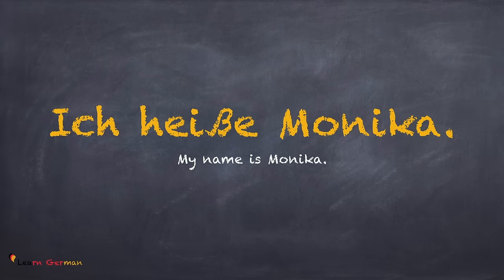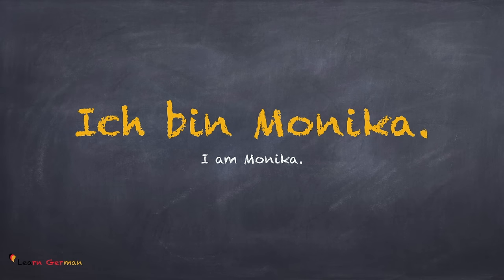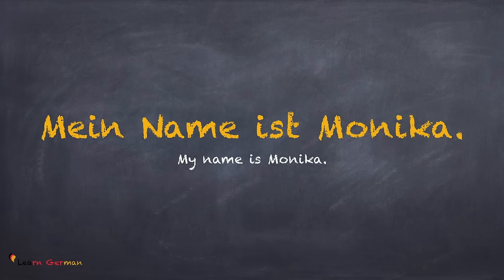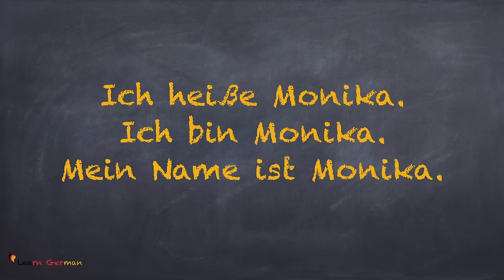Let's begin with the name. Ich heiße Monika. Do remember that the beta sign here has the sound of double S. Another way of saying your name is Ich bin Monika. This sentence is generally used amongst friends. A formal way to say your name is Mein Name ist Monika. Now let's put together all three ways: Ich heiße Monika. Ich bin Monika. Mein Name ist Monika.